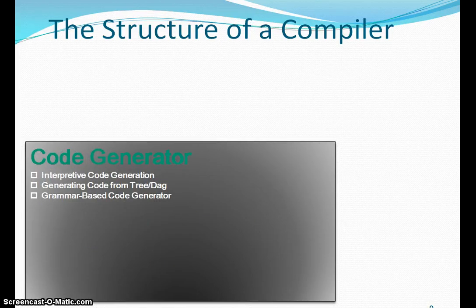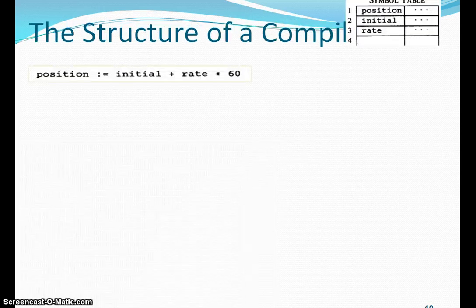And then code generation: it generates the code which the machine can understand, that is interpretive code generation. You can see the diagram here.